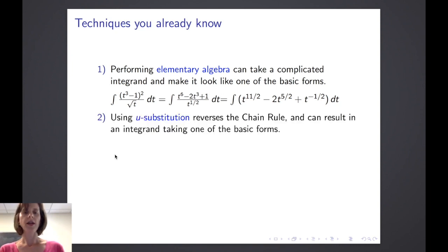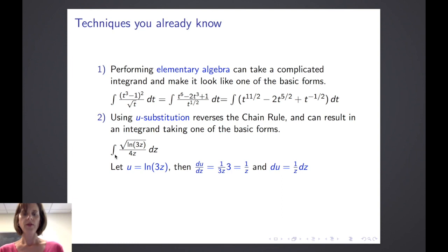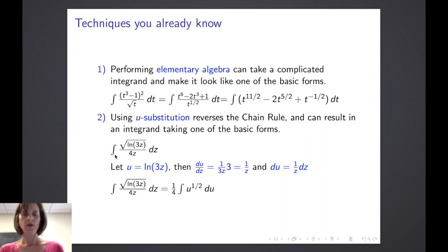You also know how to apply u-substitution, knowing that u-substitution reverses the chain rule and can result in an integrand taking one of the basic forms. As an example, we have the integral of the square root of the natural log of 3z, all divided by 4z, dz. If we let u equal the natural log of 3z, then the derivative of u with respect to z is 1 over z, and we change this more complicated integral into one that takes a very basic form, applying the power rule.